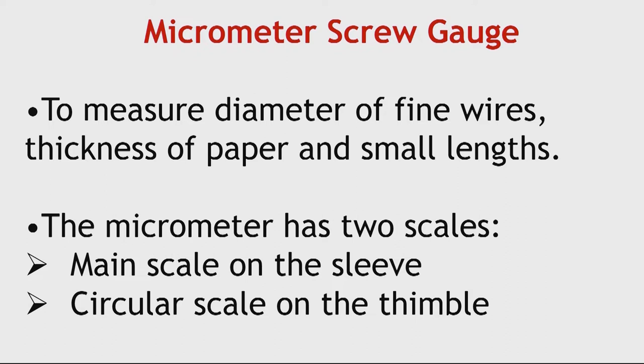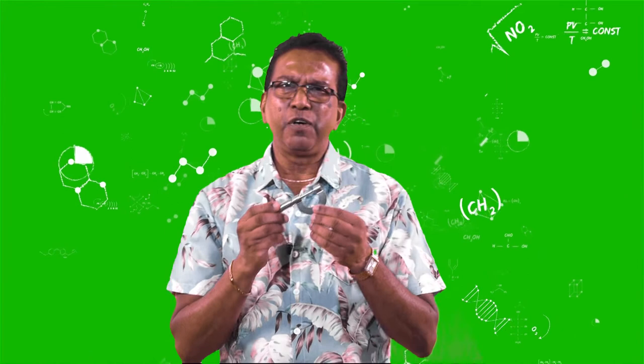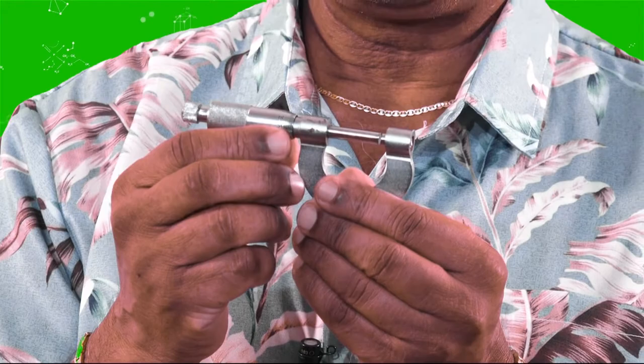This is important. Now, the micrometer screw gauge. I have one here. And this is used to measure very short, very small distances. It has got two scales, the thimble and the sleeve scale.